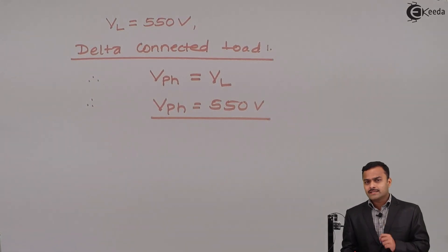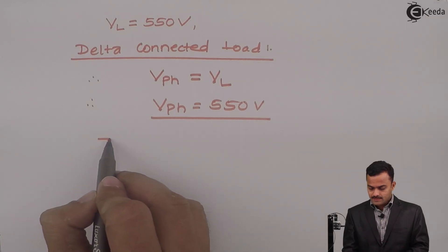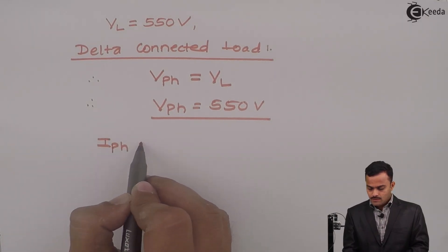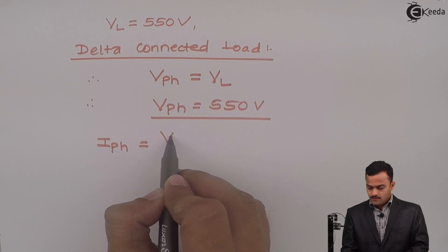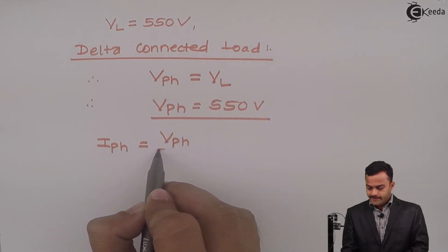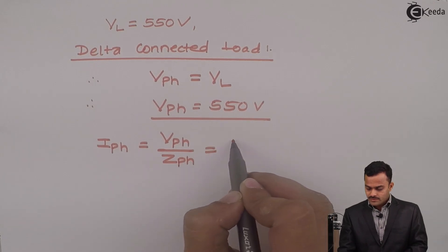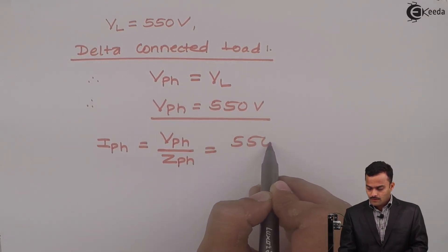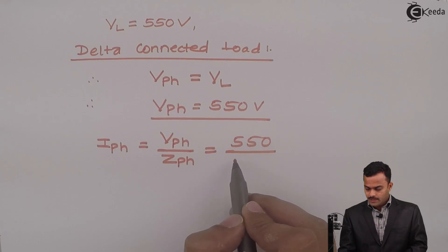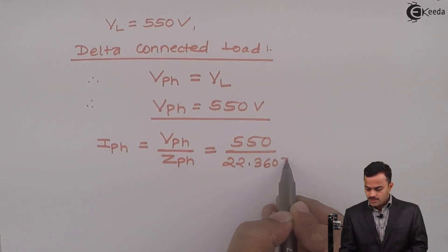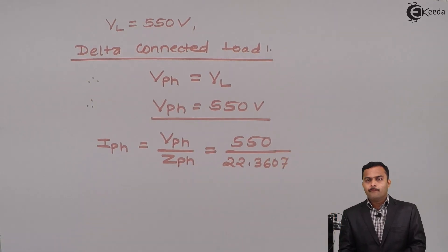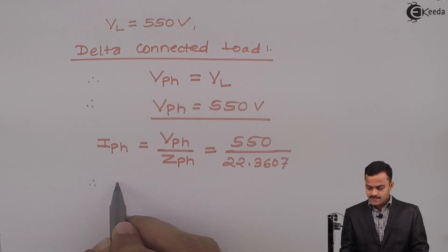Why this phase voltage is required? In order to calculate phase current. Phase current is nothing but phase voltage divided by phase impedance, so it's 550 divided by 22.3607. If I solve I will get IPH as 24.5967 ampere.